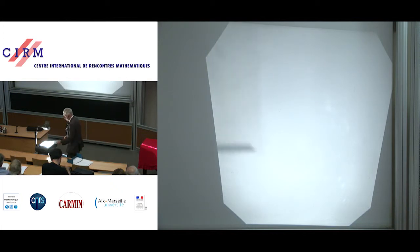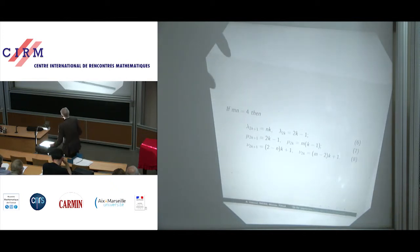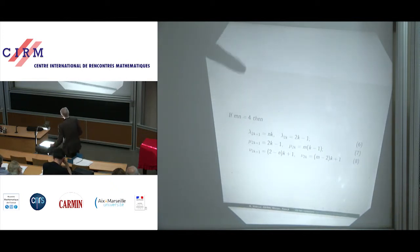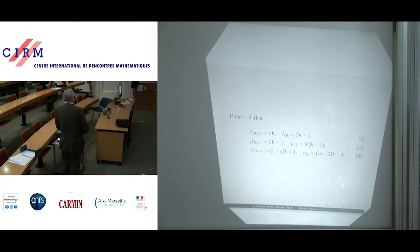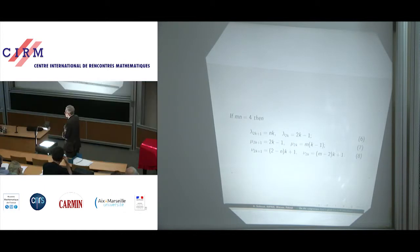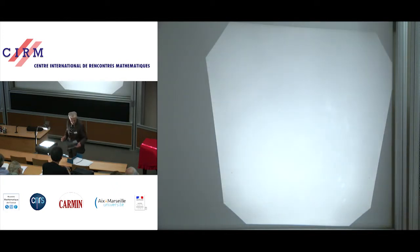And if MN equals 4, the formula is much simpler. However, this is shown only for completeness, because in the case of Theorem 4 the product MN is always greater than 4, so this case is not needed.